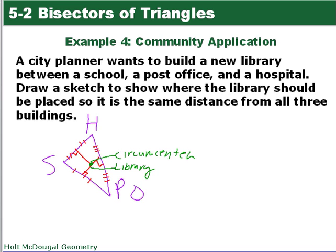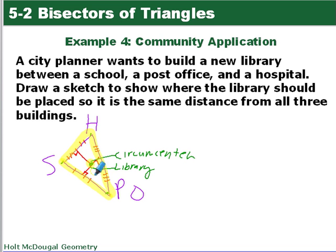A city planner wants to build a new library that is the same distance from a school, a post office, and a hospital. The three buildings form a triangle, and something equidistant from each vertex is the circumcenter. So we find the perpendicular bisector of each side of the triangle; where they meet is equidistant from all three vertices — that's the point of concurrency.